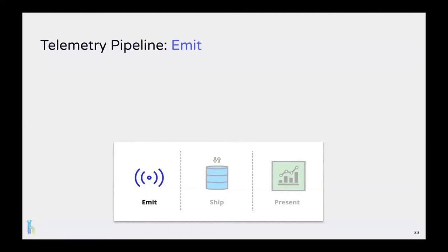The first stage is emit. This is where we add the instrumentation responsible for actually generating telemetry data. To generate traces, one approach is to use a software development kit from a framework such as OpenTelemetry. When a new request hits the service, this code generates the data needed to start tracing the journey of that request through the system. For application logs, it's common to use a logging library that generates and emits logs in a consistent, customizable format. The emitting stage is also where we prepare the telemetry data for shipping — this preparation can include formatting or enriching the data with additional contextual information.